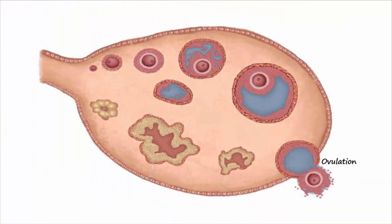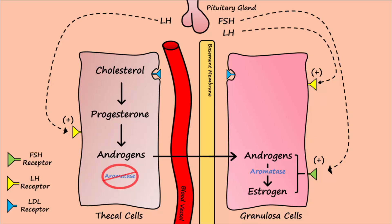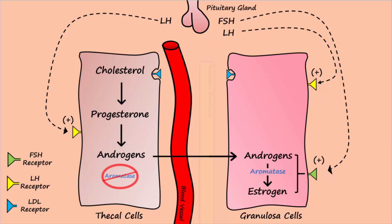After ovulation, the corpus luteum forms. In the corpus luteum, the same cells work together to produce progesterone and some estrogen. Ovulation involves the rupture of a mature follicle. When this happens, the basal membrane is breached and blood vessels gain direct access to granulosa cells, so the granulosa cells can now take in LDL cholesterol. The cholesterol is used by the granulosa cells to make progesterone.